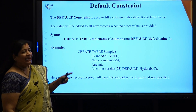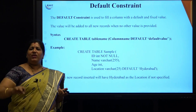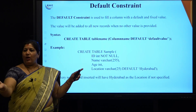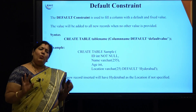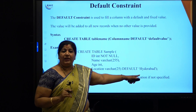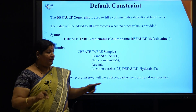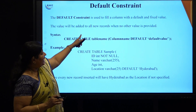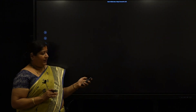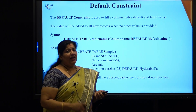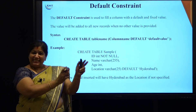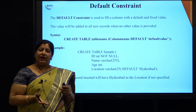Finally, coming to the default constraint. There are certain situations when most values are going to be the same. For example, taking a survey of people who visited an exhibition where most of them belong to Hyderabad. In such a situation, I can set a default value so that even if the value is not entered, it can take the default. In the case where no other value is provided, it will take this default value to fill it up.